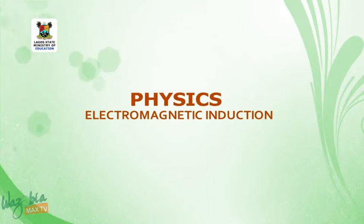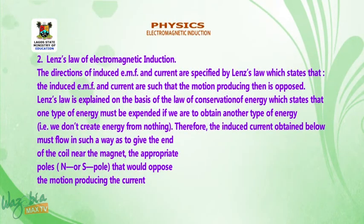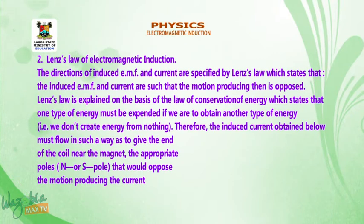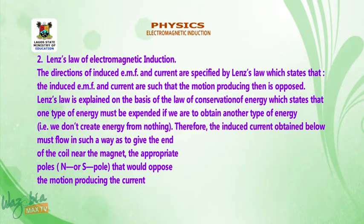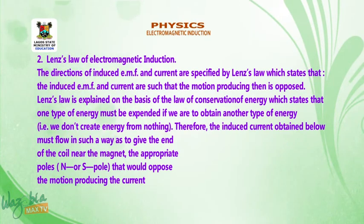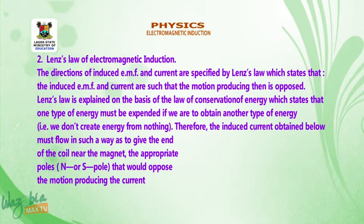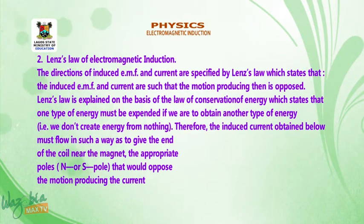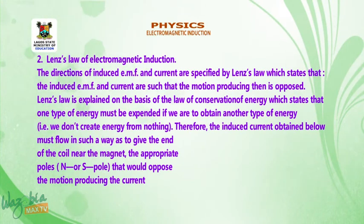We are on the law of electromagnetic induction. Lenz's law is explained on the basis of the law of conservation of energy, which states that one type of energy must be expended if we are to obtain another type of energy — that is, we don't create energy from nothing. Therefore, the induced current obtained must flow in such a way as to give the end of the coil near the magnet the appropriate pole — north or south — that will oppose the motion producing it. Look at the diagram: you can see how the direction of the current is opposing the motion causing it.